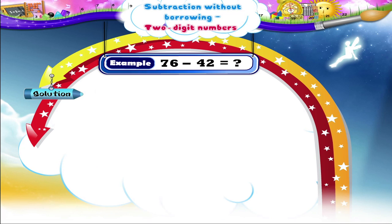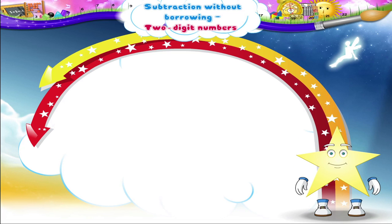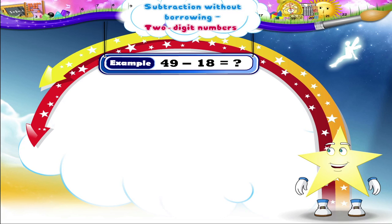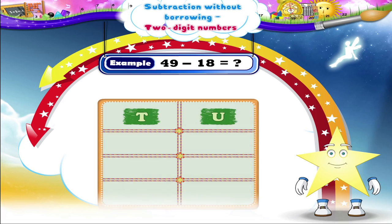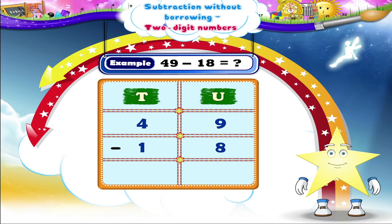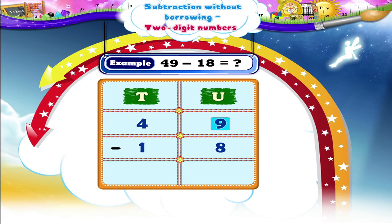Let's solve the next example. It is 49 minus 18. We shall first arrange the numbers in proper columns as shown. What is the first step, Starry? Yes, let's subtract units. So, 9 minus 8 equals 1.